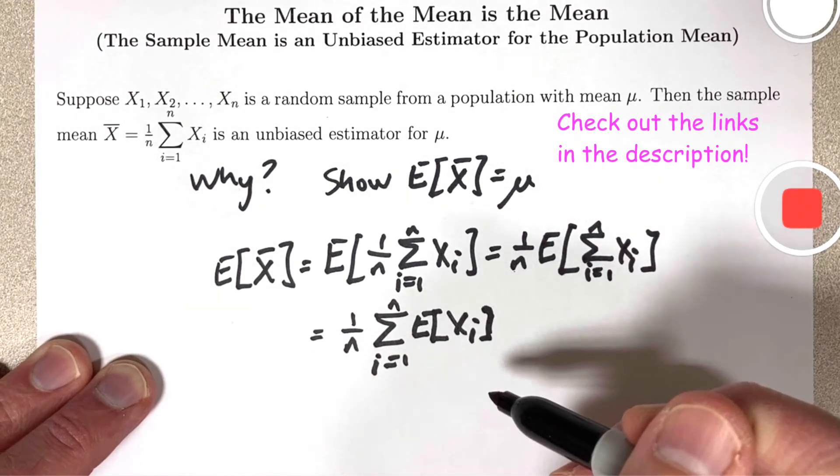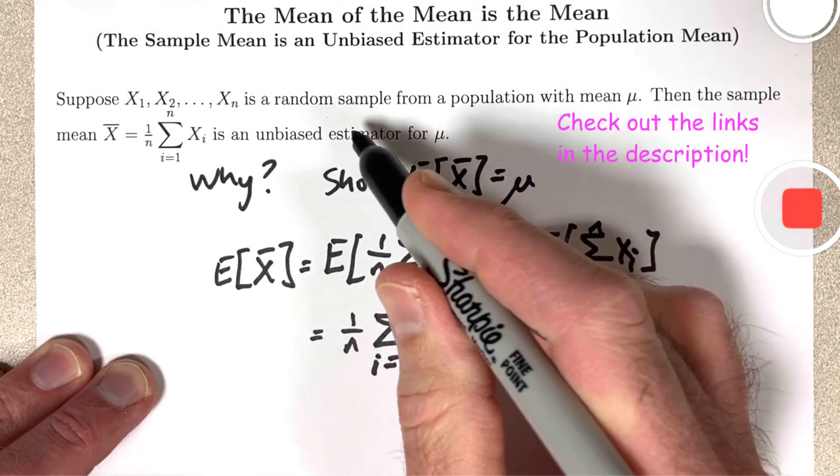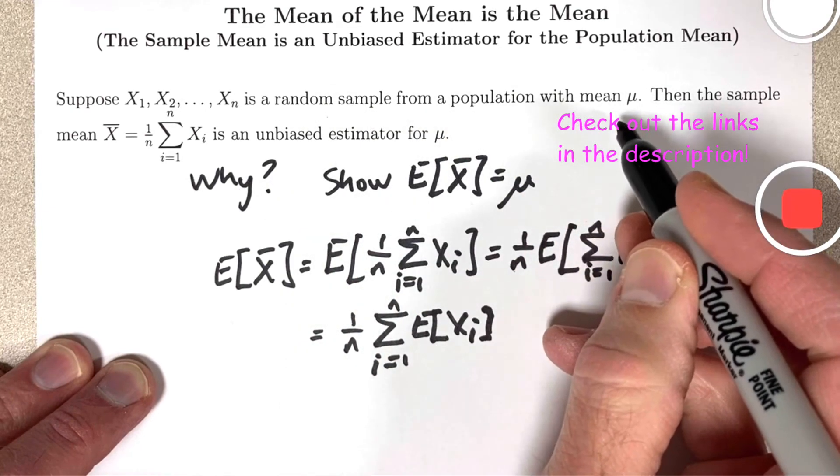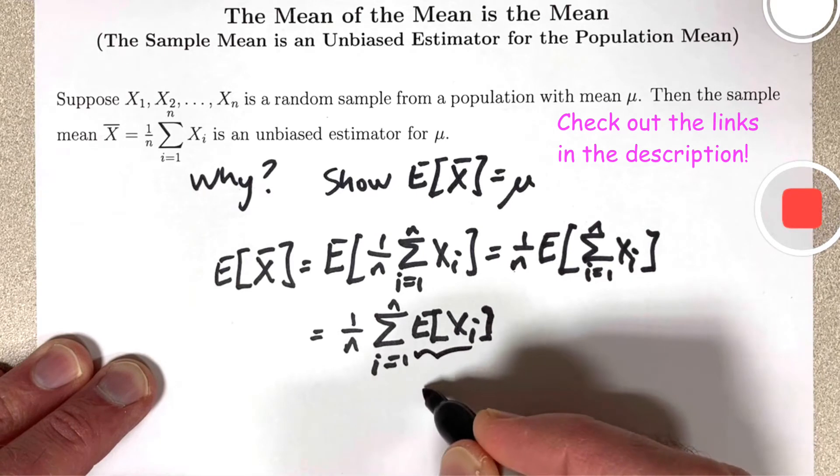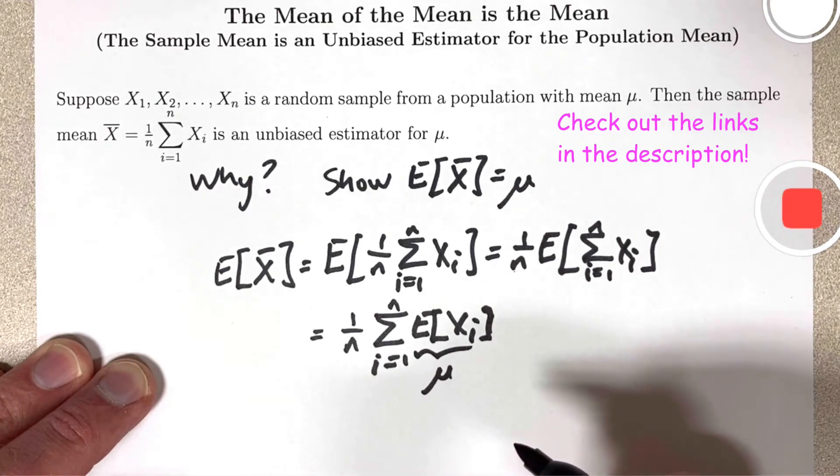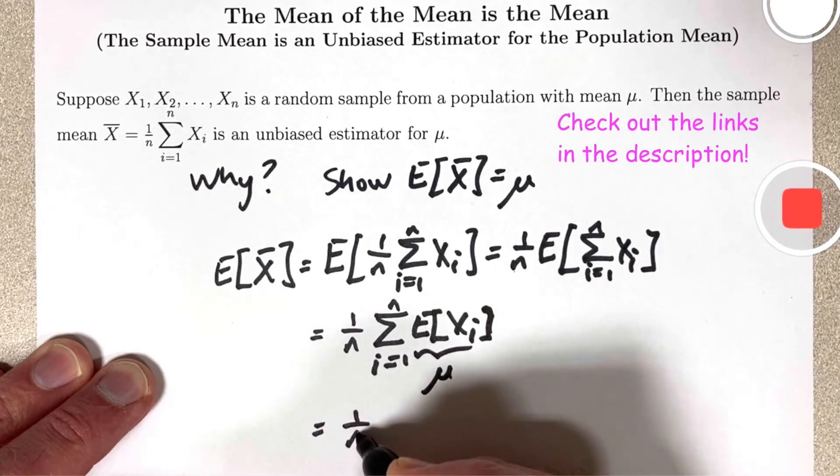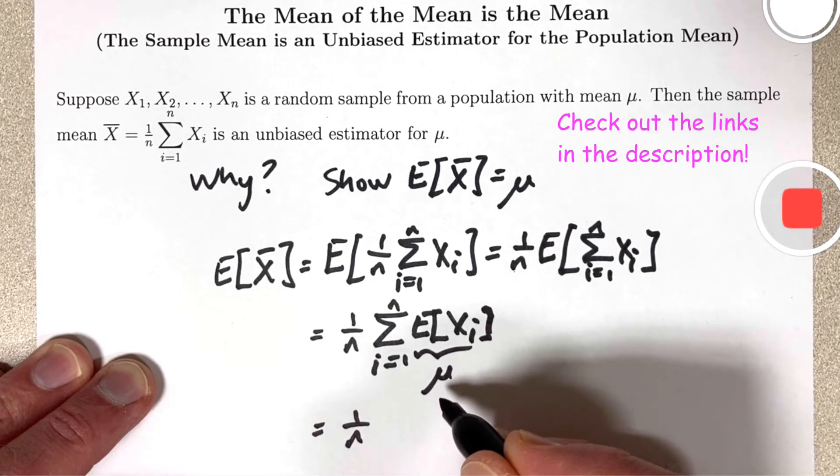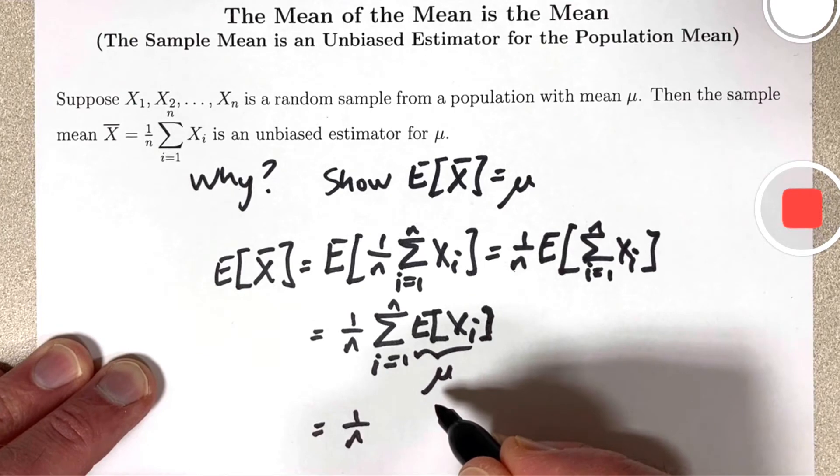But each of these xi's is a random variable from this random sample from a population with mean mu. Each of these things is equal to mu, no matter what i is. So we get 1 over n times the summation i goes from 1 to n of a bunch of mu's. How many mu's? N of them.